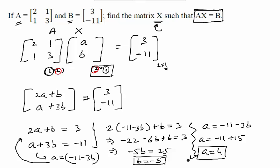So now you have individual values small A and small B. So what is X? X is nothing but the combination of these two elements. So X will become in this matrix 4 minus 5. This is your final answer.